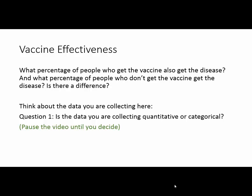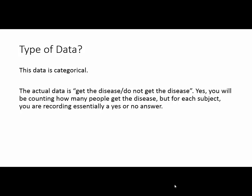We're going to ask ourselves three questions. Question 1: Is the data you're collecting quantitative or categorical? Think about the data itself that you are collecting. Pause the video, and when you're ready, move on. This data is categorical. The data itself is: did this person get the disease, or did this person not get the disease? You are eventually going to be counting that up and making a percentage out of it, but the data itself is whether or not the person got a disease. That is categorical data.